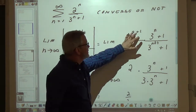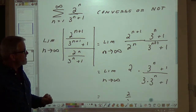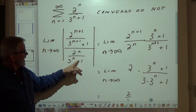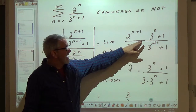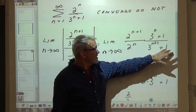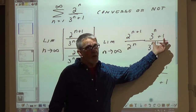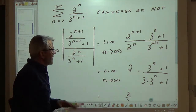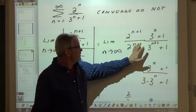This limit equals 2^(n+1) over 2^n times 3^(n+1) over (3^(n+1)+1). I'm going to flip that guy and multiply. By laws of exponents, 2^(n+1) over 2^n is just 2. Now look at this: 3^(n+1) is going to be 3 times 3^n. As n goes to infinity, this 1 in the denominator is going to be insignificant — 3^n is so big, the 1 doesn't matter.